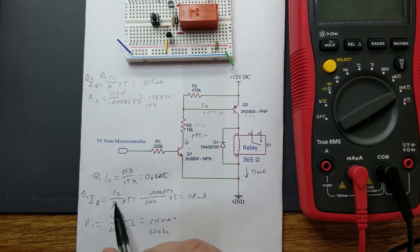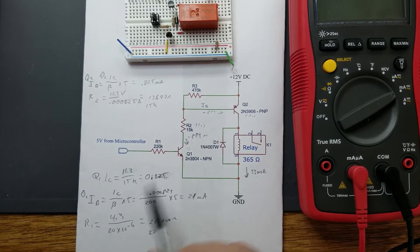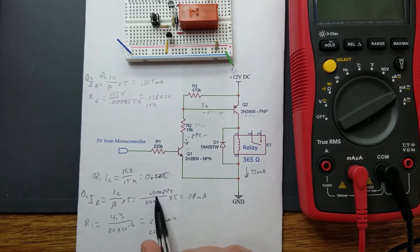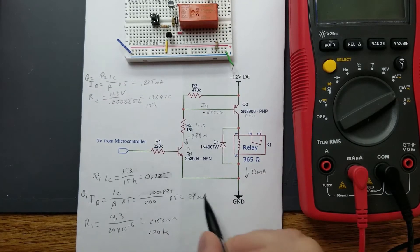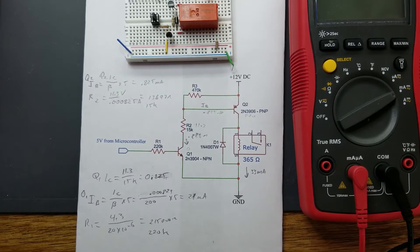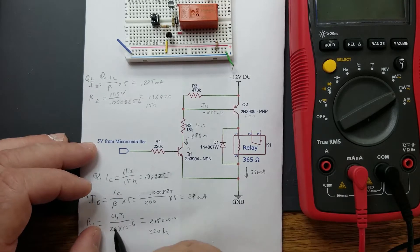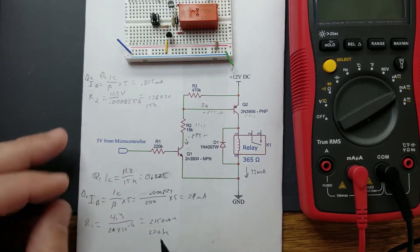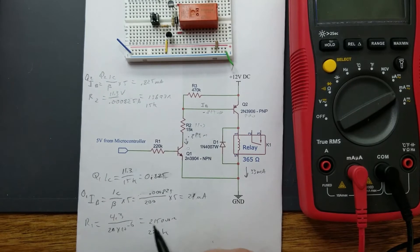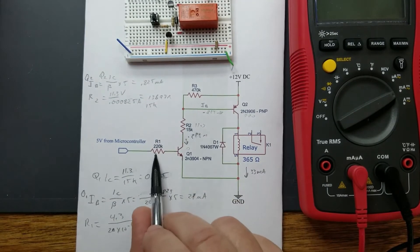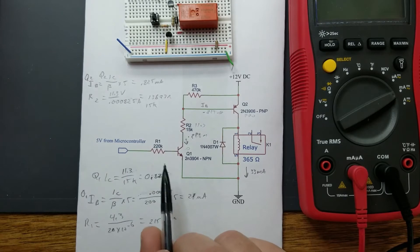Collector current 825 divided by beta of 200 typical for this transistor, times five for an overdrive. You got 0.000825 amps divided by 200 times five, that gives you 21 microamps. You take that 21 microamps, that's going to give you 4.3 divided by 21 microamps. That gives you pretty close to 220k.